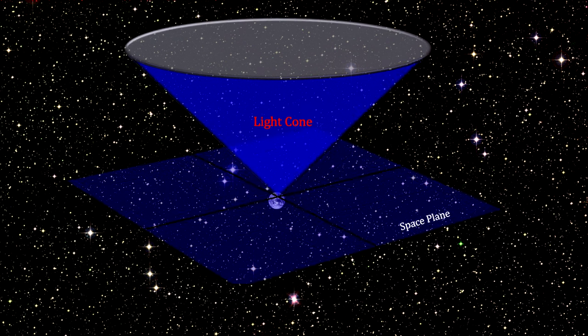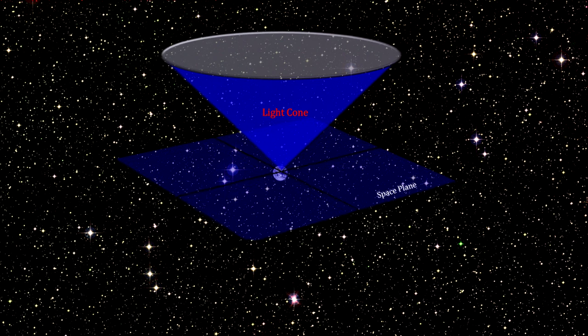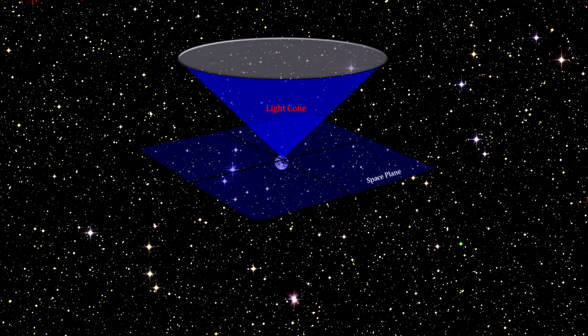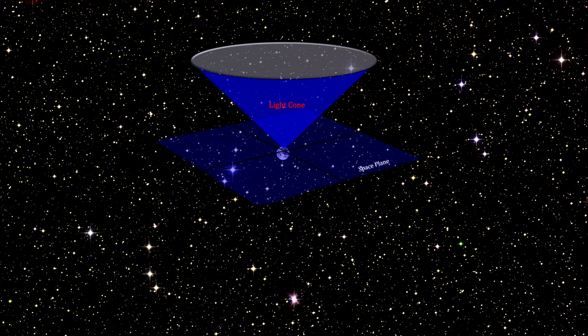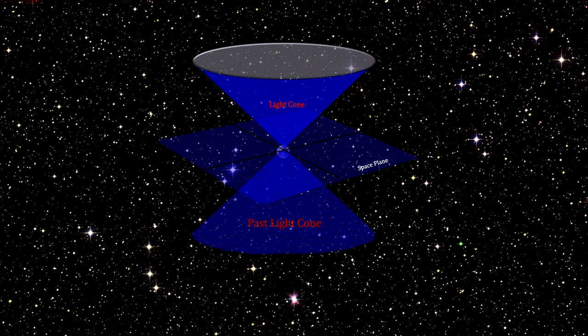If we go back in time, as well as forward in time, we get the full space-time diagram. Here we see that no past event outside the cone can be the cause of any event we see today.